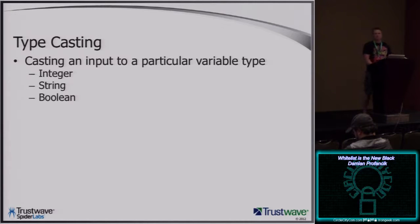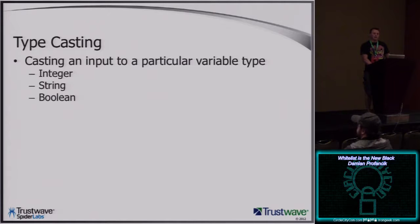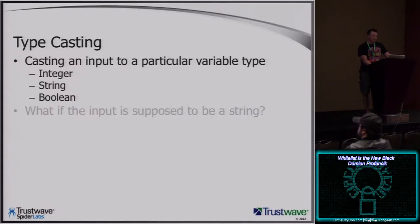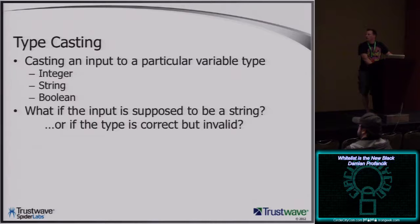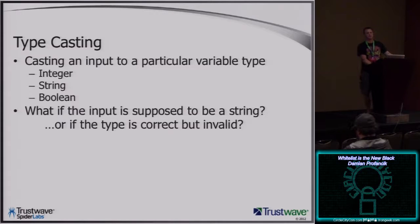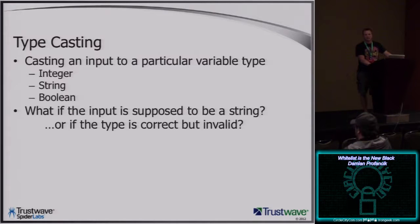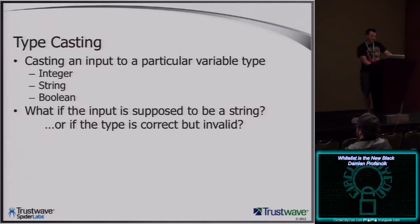Typecasting is something you should be doing but often isn't. If you're dealing with an ID value or number, you should be typecasting and making sure you're getting a number, not a string with miscellaneous characters. The problem is if the input is supposed to be a string, that's a challenge. Or if the type is correct but the value is invalid — like a negative value — that happens a lot on shopping cart applications where I can specify negative quantities or prices and actually get credits. So you should be validating, not just typecasting.